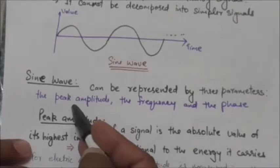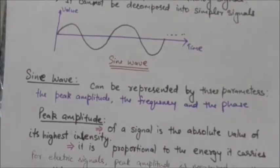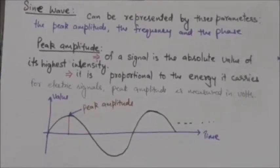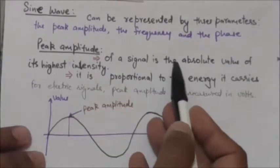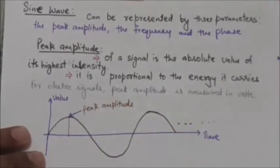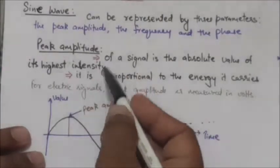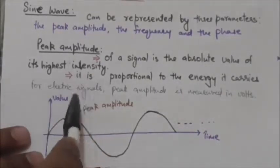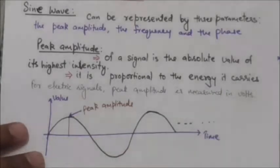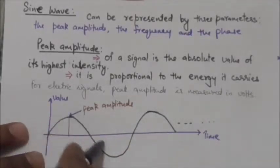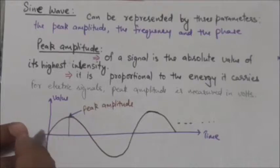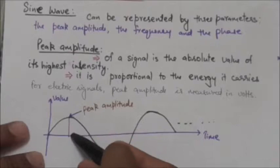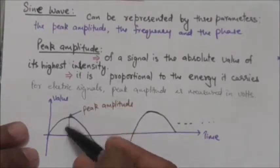A sine wave can be represented by three parameters: the peak amplitude, the frequency, and the phase. The peak amplitude of a signal is the absolute value of its highest intensity. This peak amplitude is proportional to the energy it carries. For electric signals, peak amplitude is measured in volts. In this figure you can see the peak amplitude of this sine wave.